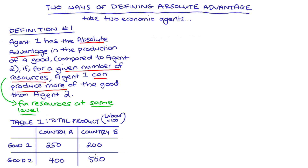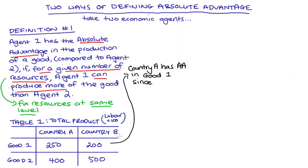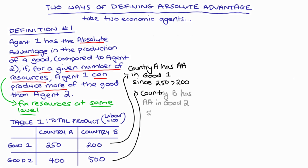From our definition, to find absolute advantage we just look to see who is making more of the product. Looking at good one: country A can make 250, country B can make 200, so country A has an absolute advantage — AA — because 250 is greater than 200. For good two: country A can make 400, country B can make 500, so country B has the absolute advantage in good two because 500 is greater than 400 — they can produce more given those 100 labor units. That's our first definition: pretty common and pretty straightforward, but we do fix the amount of resources each agent has.